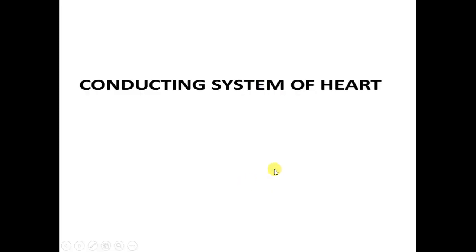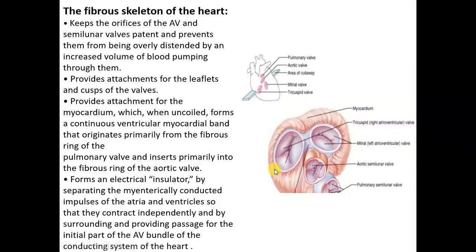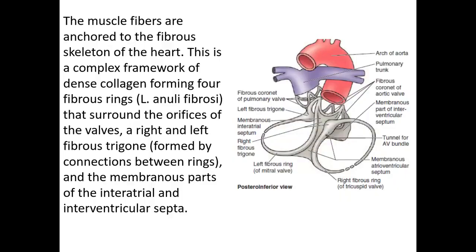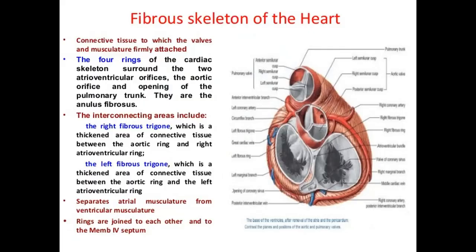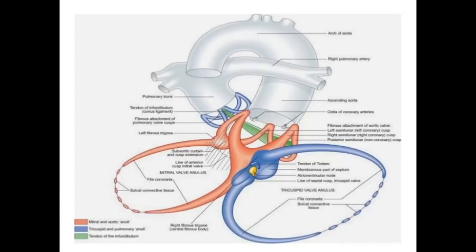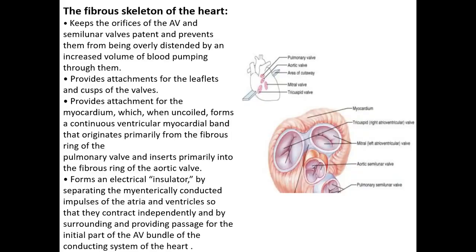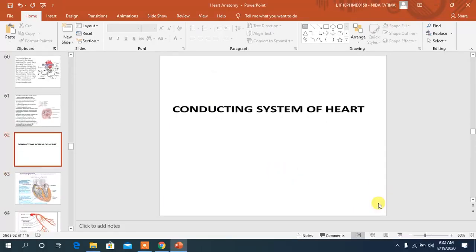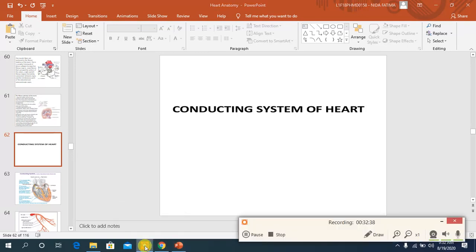We have now learned about the valves of the heart and the fibrous skeleton. In the next lecture, we will discuss the conductive system, the arterial supply, and the venous drainage of the heart.